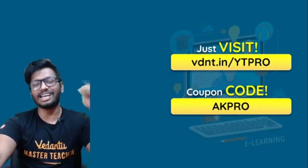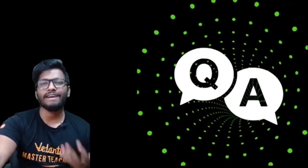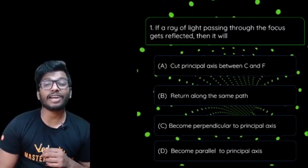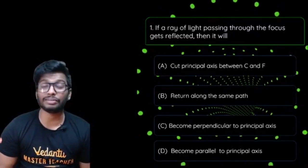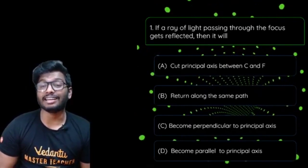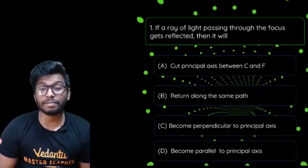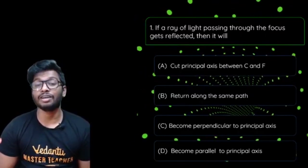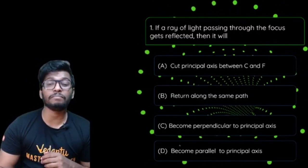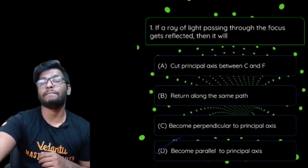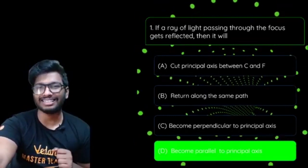Now let's solve some questions. Please put your answers in the comment section. Question 1: If a ray of light passing through the focus gets reflected, it will — (a) cut the principal axis between C and F, (b) return along the same path, (c) become perpendicular to the principal axis, or (d) become parallel to the principal axis? The answer is option D — it becomes parallel to the principal axis.